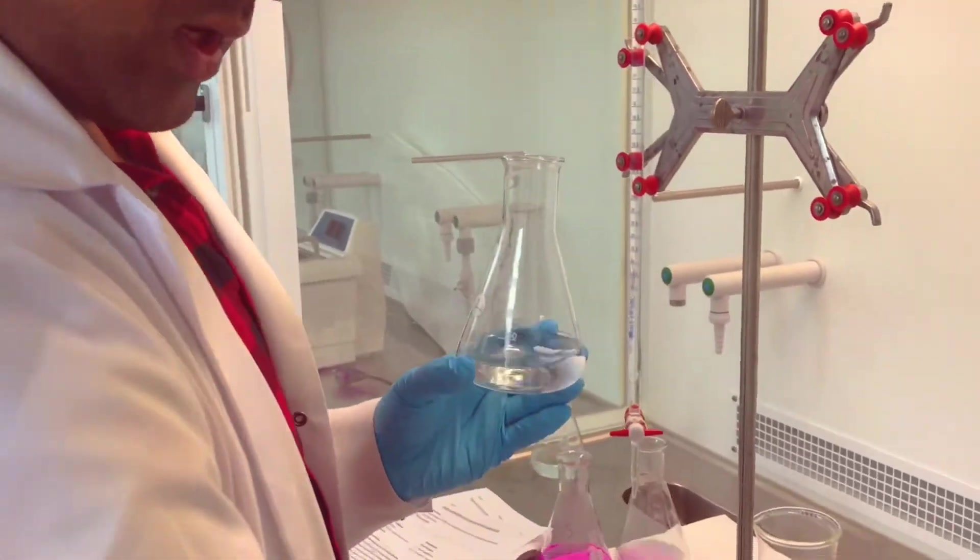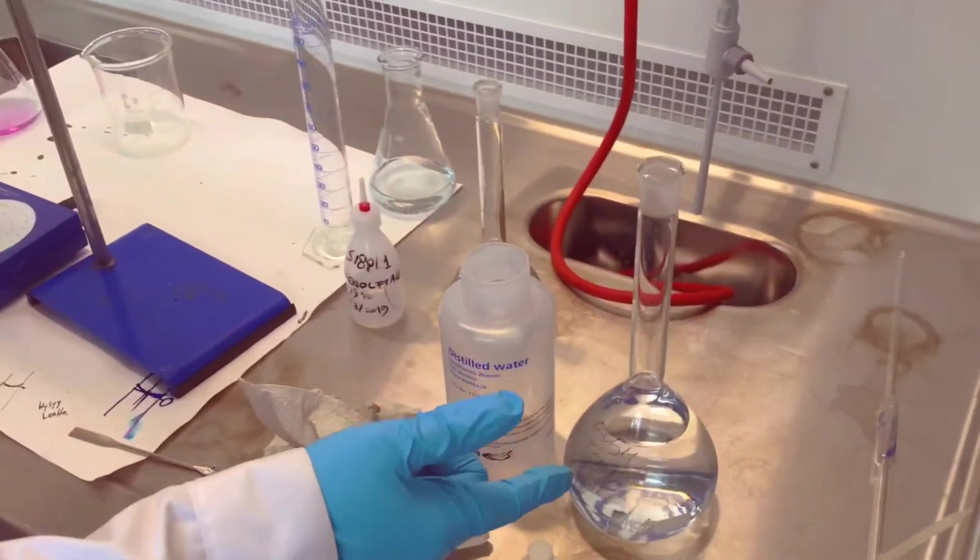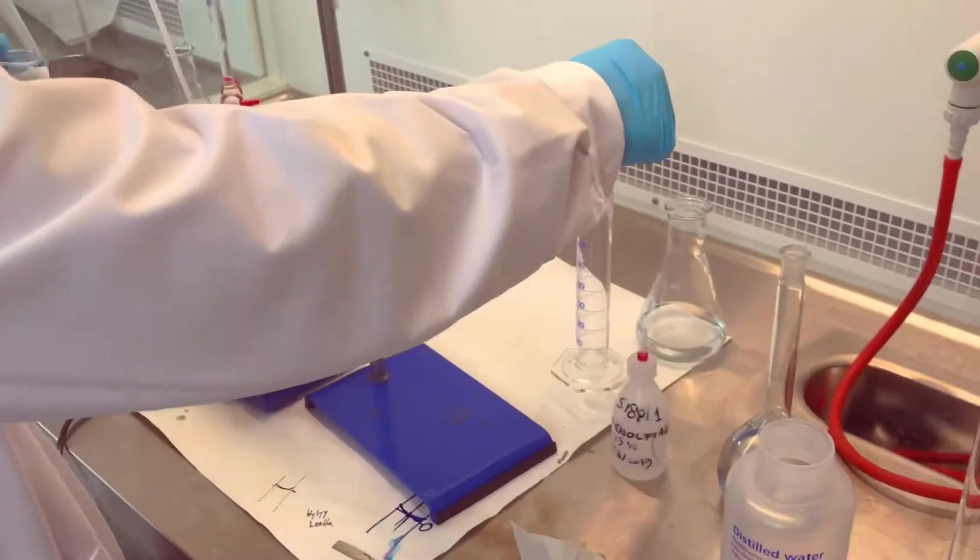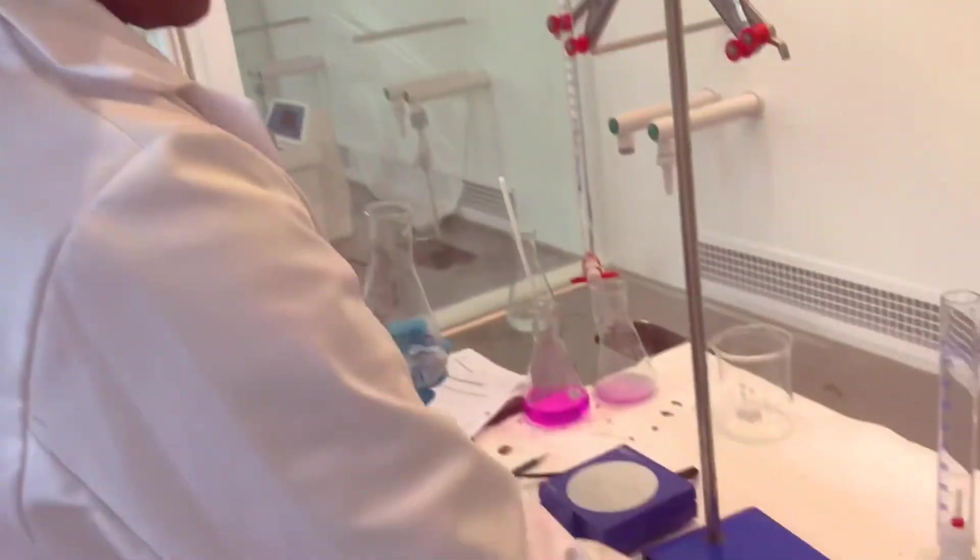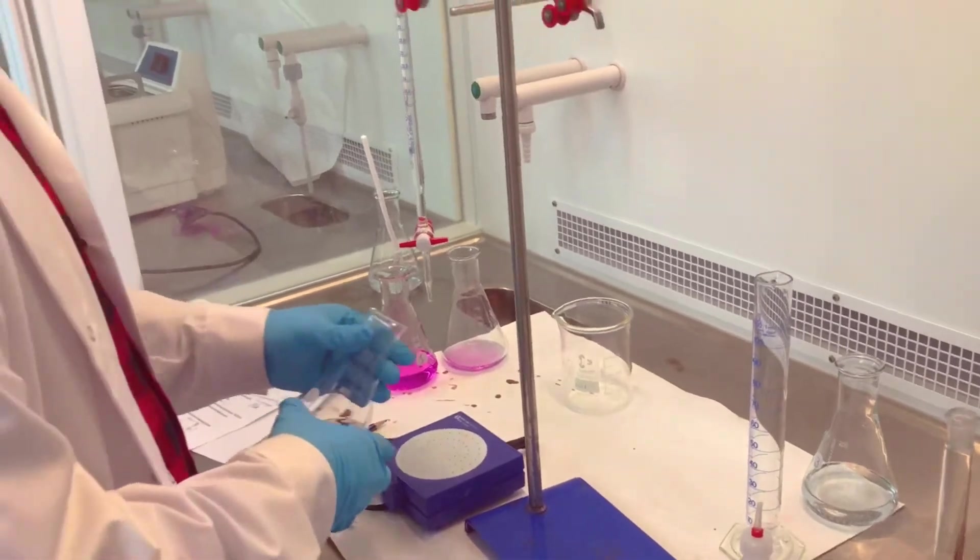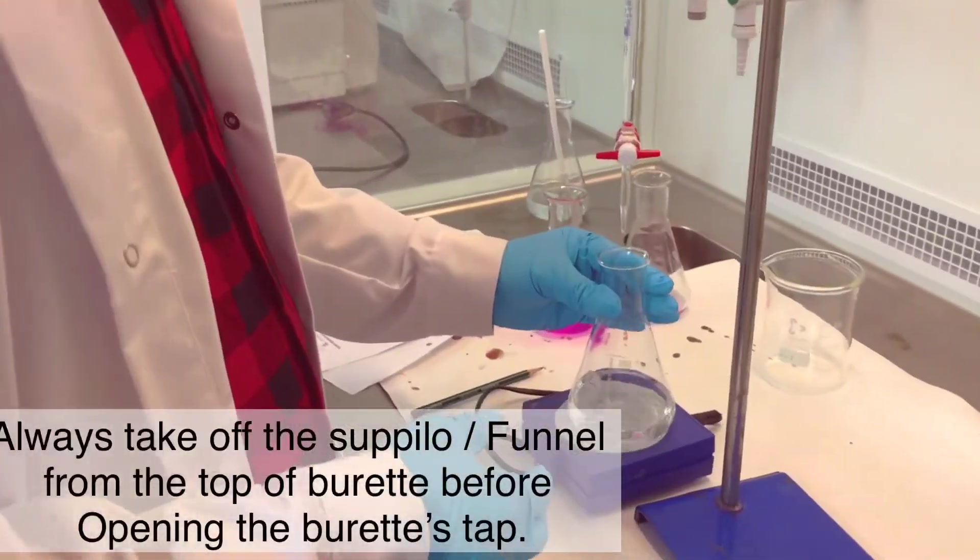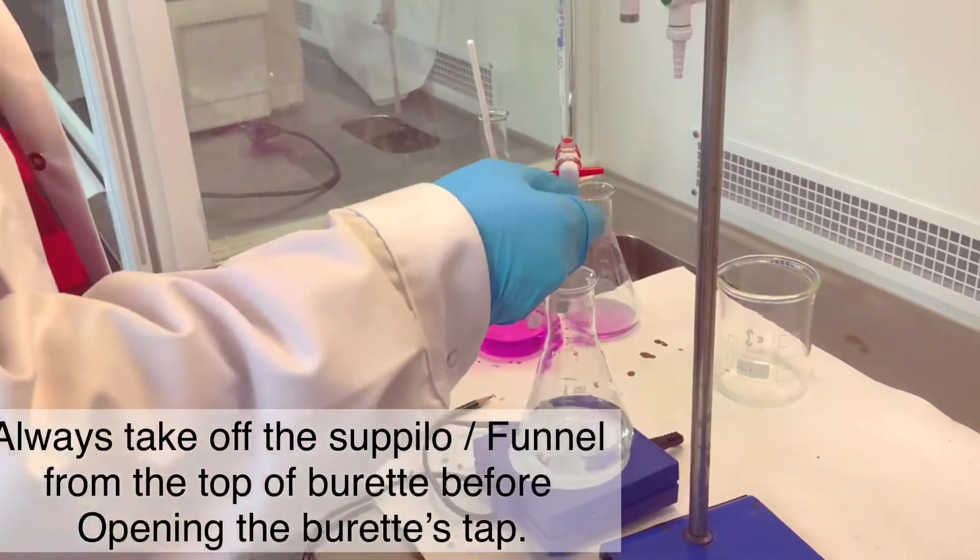So this is here. What is here? 10 milliliters of oxalic acid and then 70 milliliters of water, and then two drops of indicator. Then I put it here, it's mixing. Now I start it.